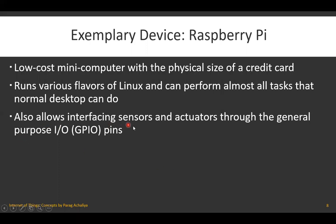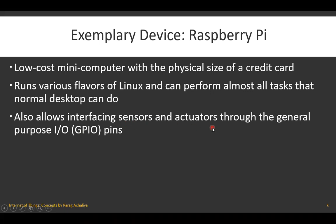Raspberry Pi also allows interfacing various sensors and actuators through General Purpose Input Output pins, usually known as GPIO pins. These GPIO pins are responsible for connecting various sensors and actuators with your Raspberry Pi. Remember this when developing any IoT application.